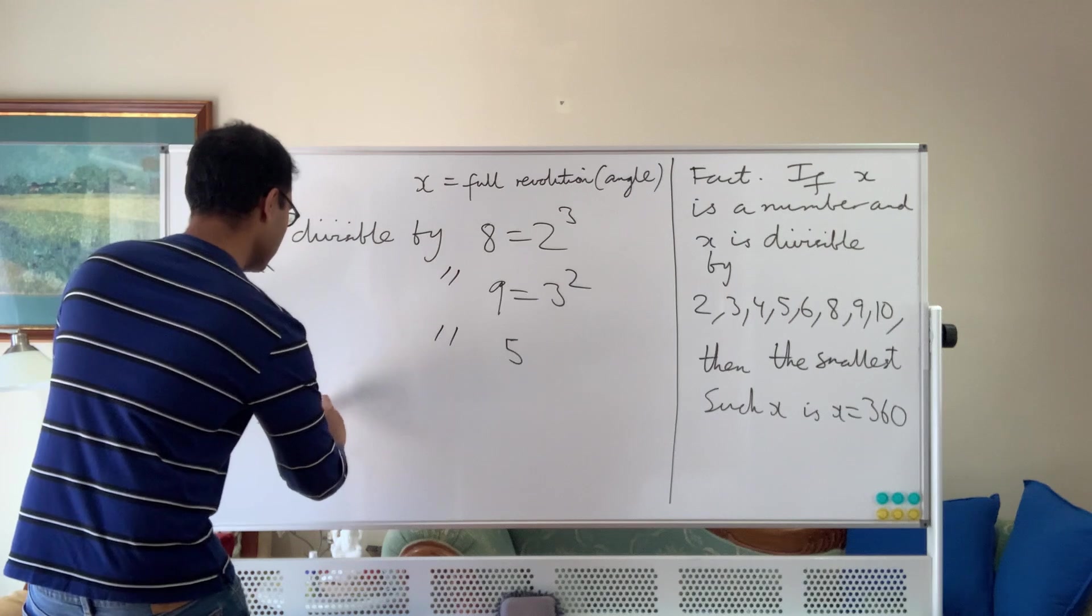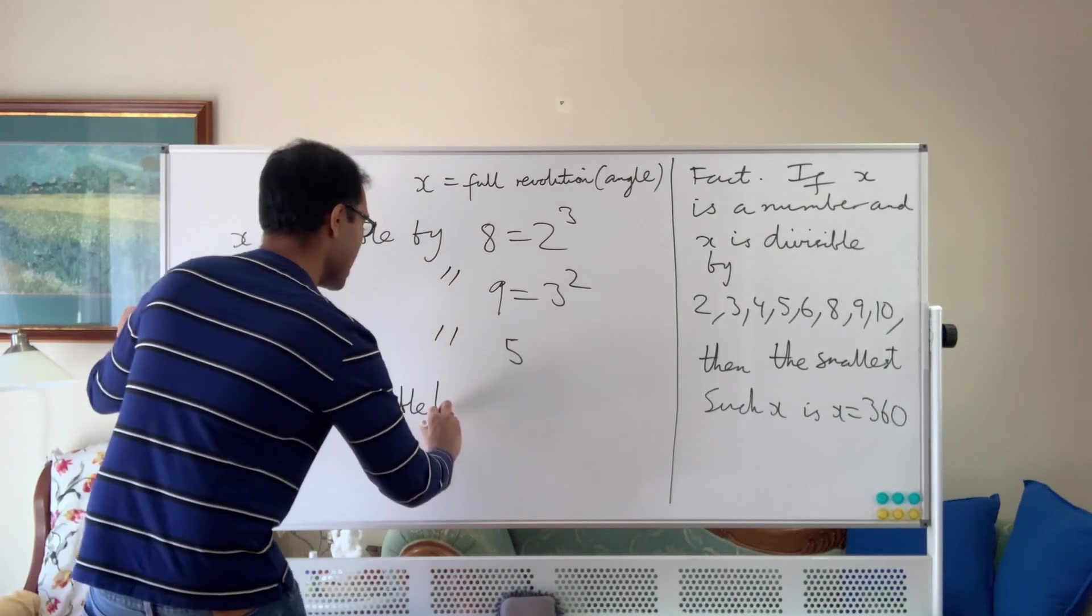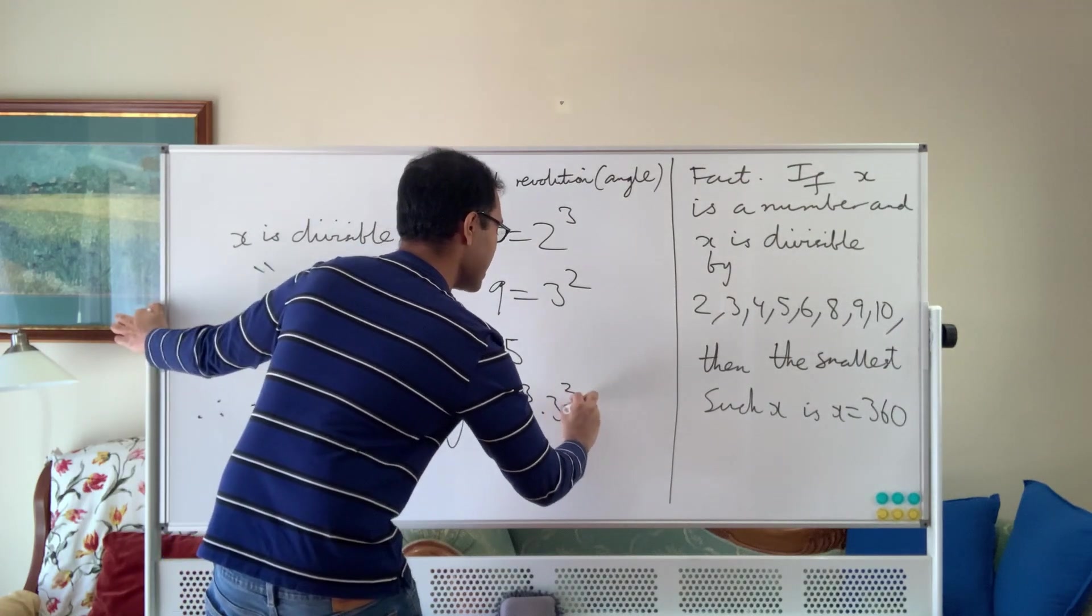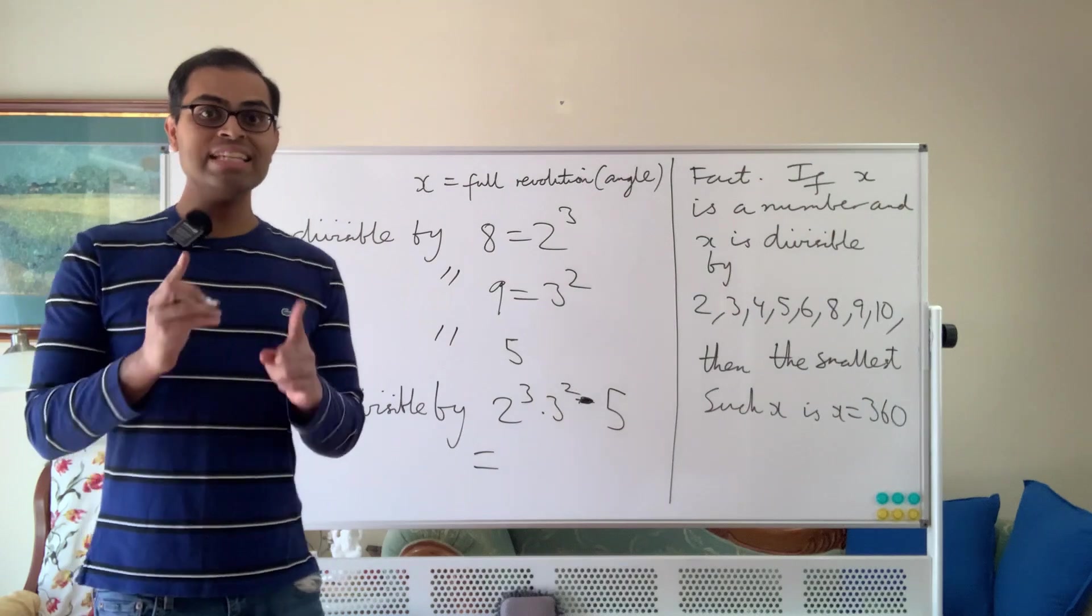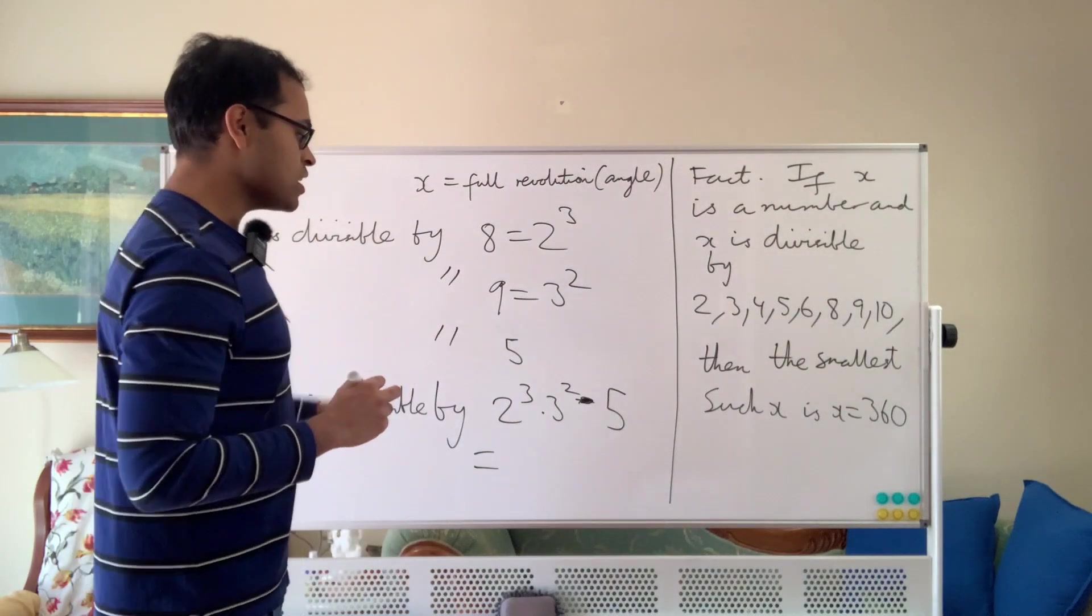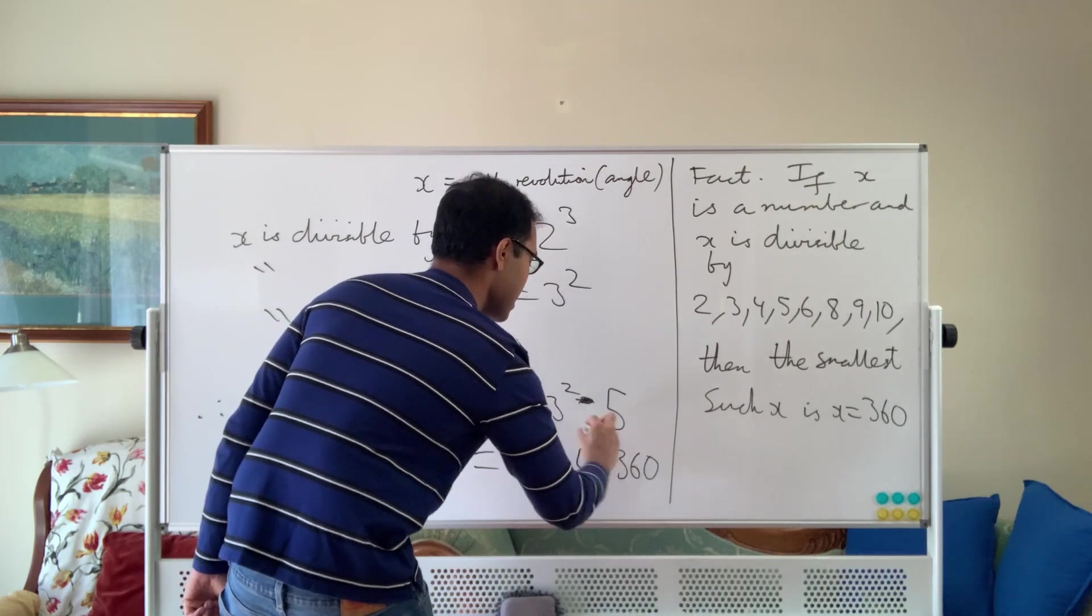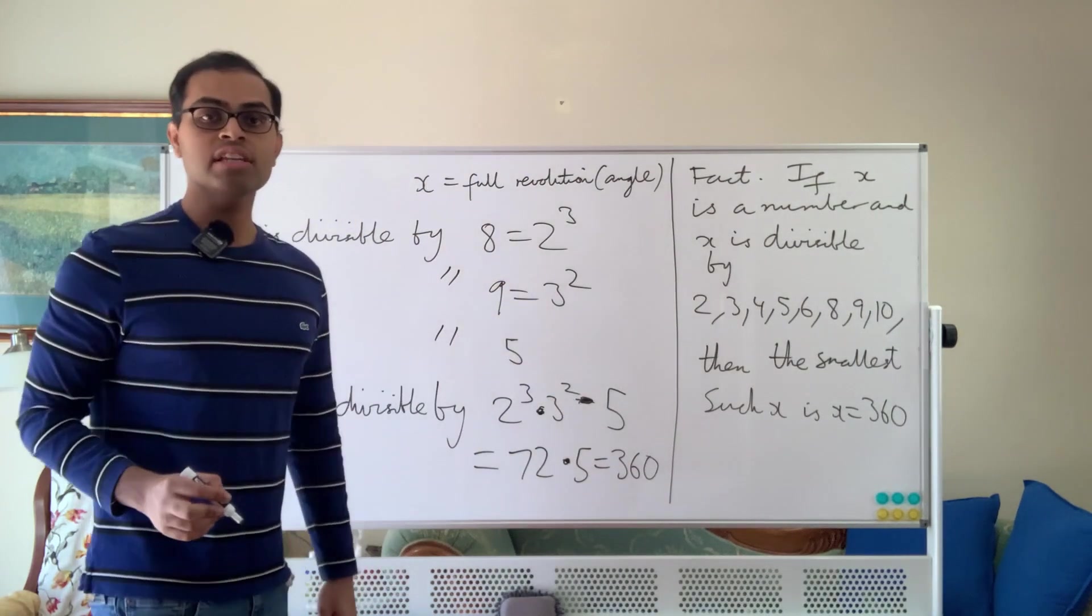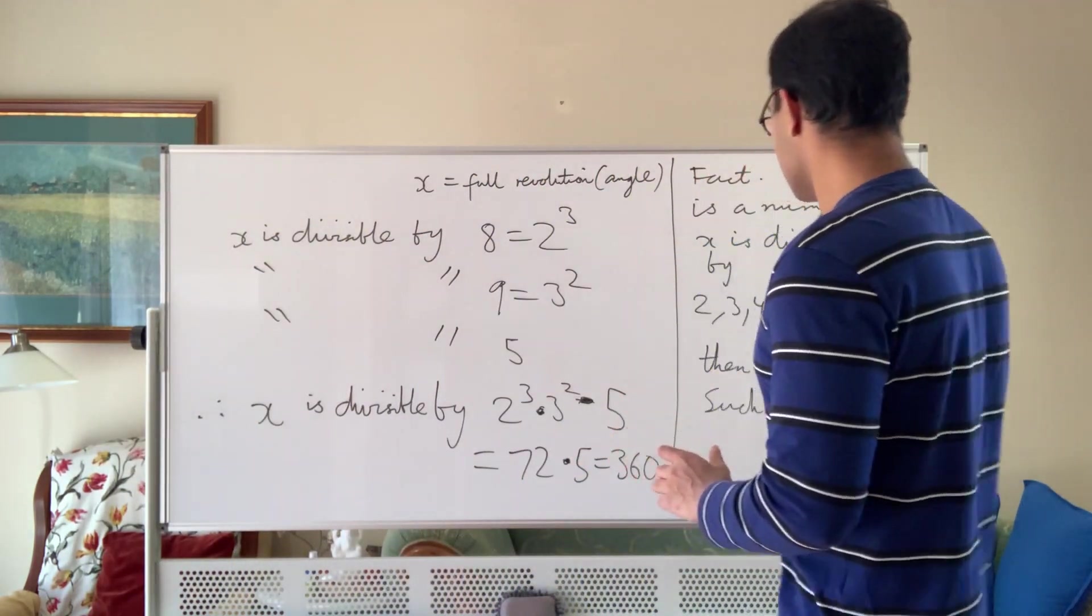x is divisible by the product of all these numbers, x is divisible by 2 cubed times 3 squared times 5, which is equal to, well, 2 cubed times 3 squared is 8 times 9 is 72. 72 times 5 is equal to nothing other than 360. So here I'm using dot to denote multiplication, not decimals, that's 360 degrees. So that is why 360 is the smallest number that is divisible by all of these.